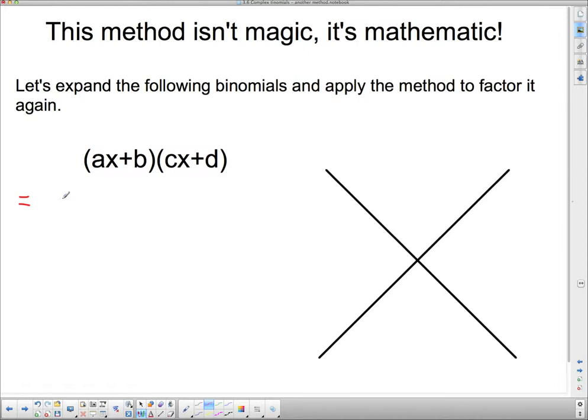So ax times cx is acx squared, and ax times d is plus adx, and b times cx is plus bcx, and b times d is plus bd.